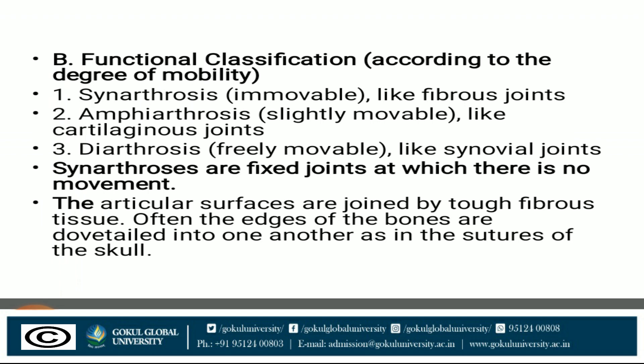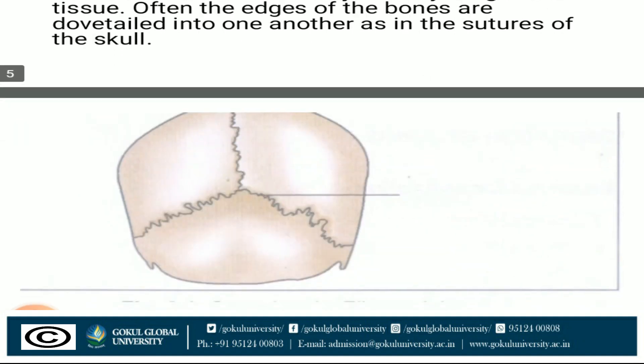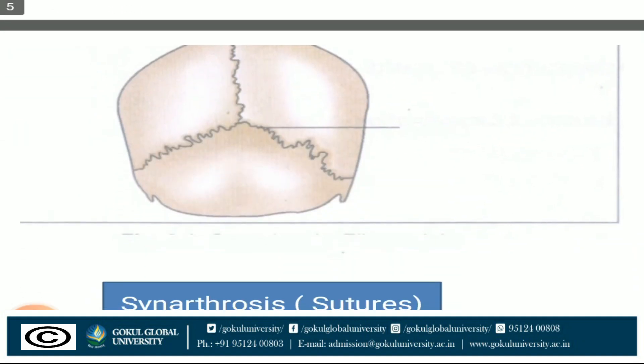Synarthrosis joints are fixed joints at which there is no movement. The articular surfaces are joined by fibrous tissue, and often the edges of the bones interlock with one another, as in the sutures of the skull — as shown in this diagram.